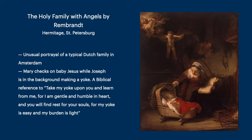Here we have the Holy Family with Angels by Rembrandt. This is a very unusual look of the Virgin Mary caring for her baby child — one might say a typical Dutch family in Amsterdam. She's checking on her baby while Joseph is in the background making a yoke. The biblical reference is: 'Take my yoke upon you and learn from me, for I am gentle and humble in heart.' And you see a flurry of angels that are descending onto the scene.